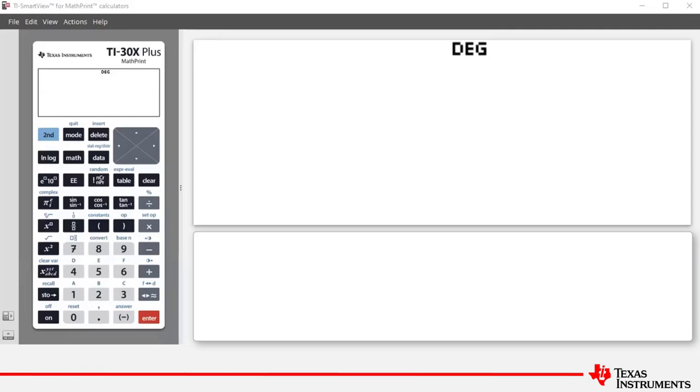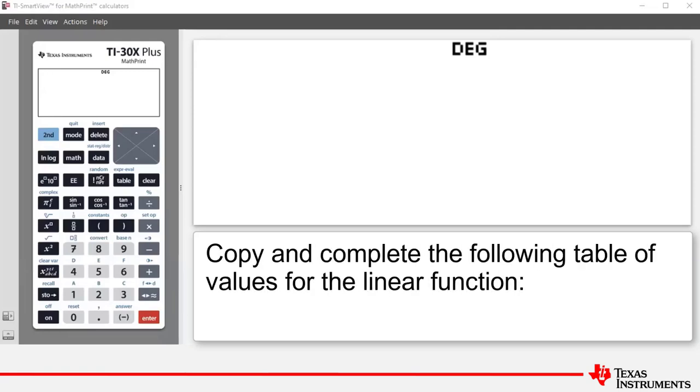The example says, copy and complete the following table of values for the linear function y equals 3x plus 6. And you'll note that the x values start at negative 3 and go through to 2.